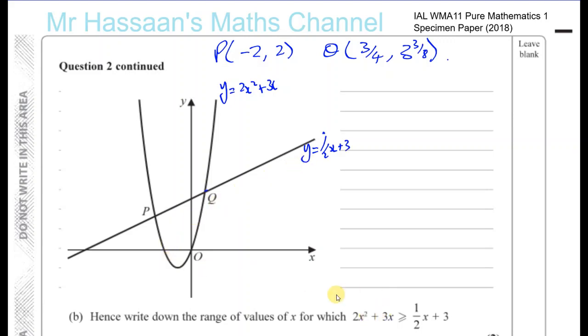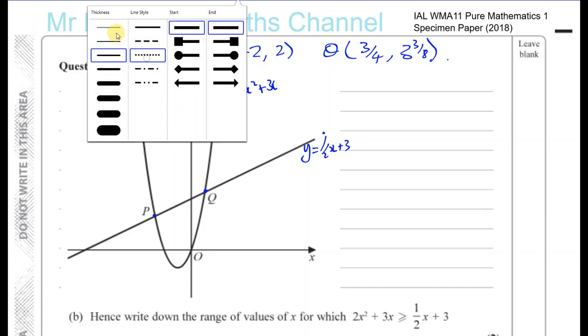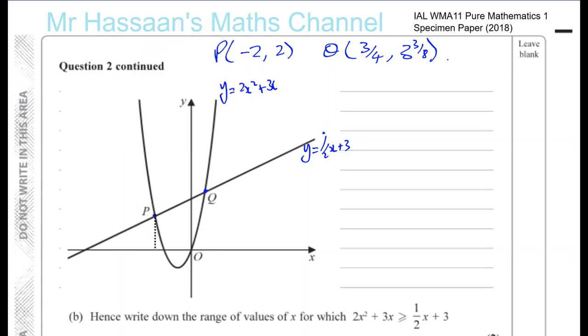So basically, where are the values of the curve above the values of the line? You can see that point P and Q are where they're both equal to each other. And that would be the boundary of where one becomes bigger or smaller than the other. So let's just draw a little line there from there to there and from there to there. So we know that between minus 2 and at 3 quarters is where the two curves, the line and the curve are equal to each other. Now you can see that the curve rises above the line, which is what we want to see here.